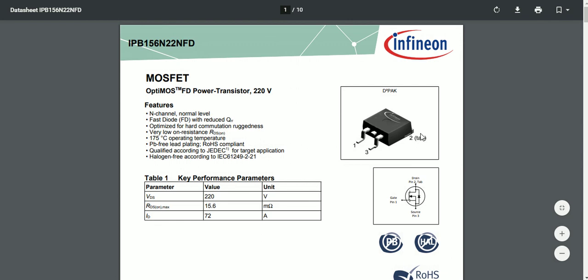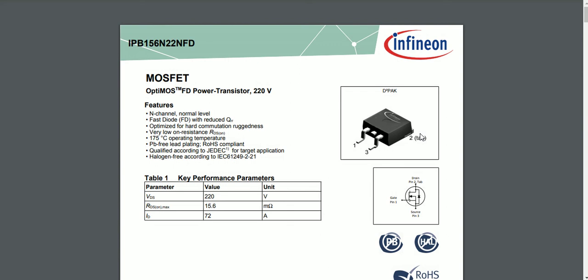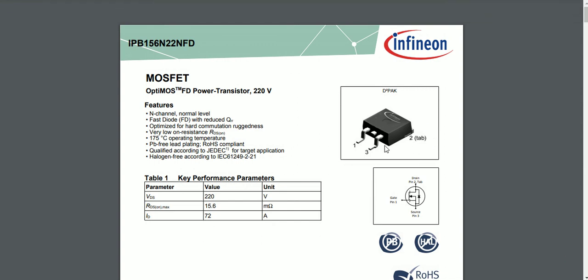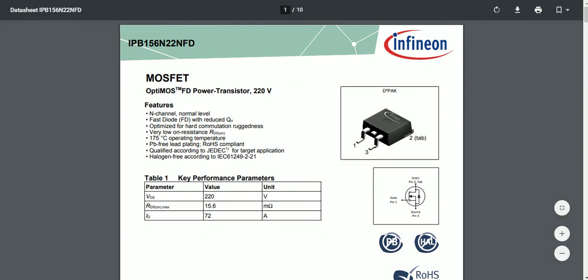For power to dissipate, it flows from the source toward the drain. But in some applications, the source also needs to dissipate power because current flows through the source to ground, requiring a bigger pad there. Considering these scenarios, Infineon has implemented source-down power MOSFETs where the lead frame is closer to the source terminal.